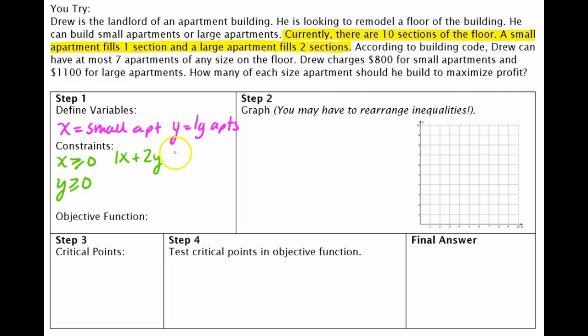So that means ten is the maximum. He can't go over ten. He could use less than ten, but he can't use more. So I want to do less than or equal to ten. So he could use exactly ten, but not more. Alright, so that's this yellow sentence here.